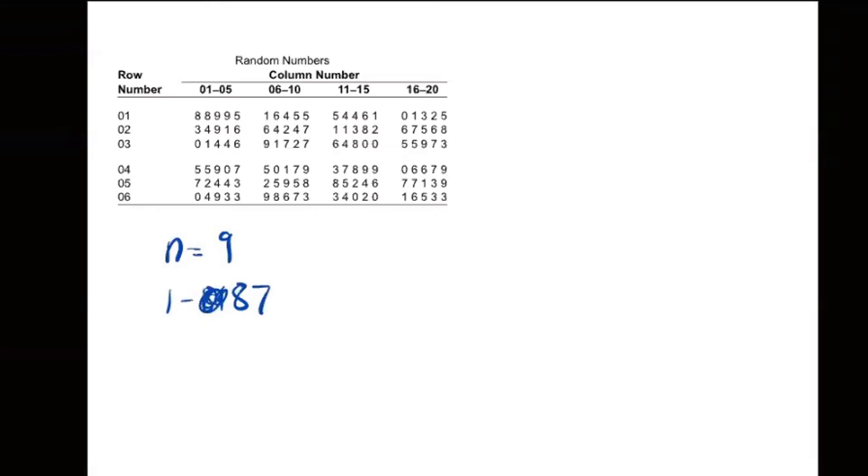We can't have a number that's bigger than 87. We have to throw that out. It did say to start in row three, column six. Because my biggest number is 87, and that has two digits, I'm going to be working with two digits at a time.